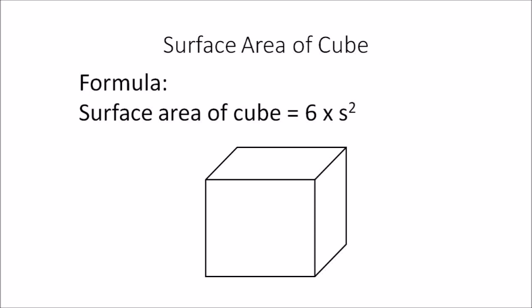We use 'squared' because we're calculating the surface area of each face, and each face of a cube is a square. So s multiplied by s — one side length multiplied by the other side length, which are the same — gives us the surface area of one face. That amount is then multiplied by 6 because a cube has 6 faces.